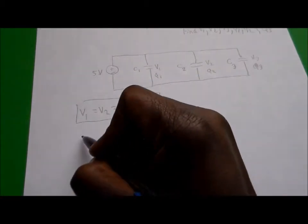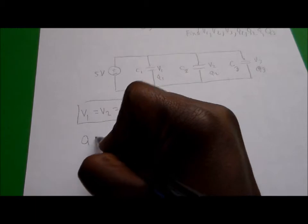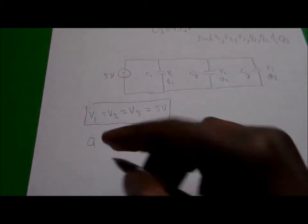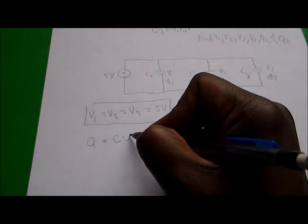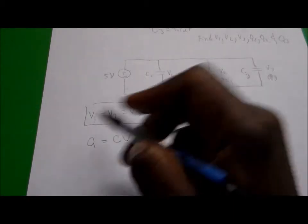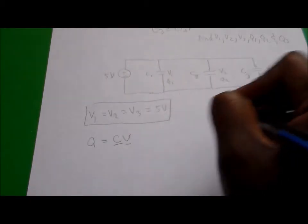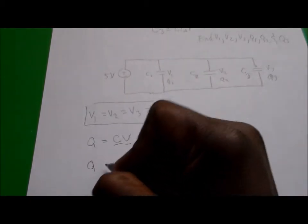We also know that Q is equal to CV. So if we wanted to find the charge across each of these capacitors, we already know what the capacitor value is, we listed them above, and we know what the voltage is across all of them. So we can find the charges.